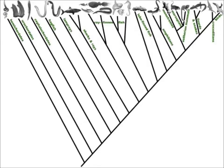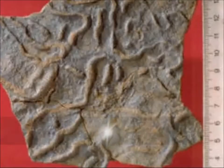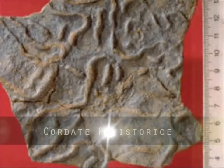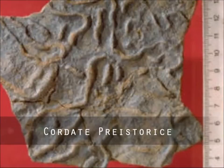FILUMUL CORDATA. Animalele reunite sub numele de cordate ne sunt cele mai apropiate, deoarece cuprind alături de alte vertebrate și specia umană.